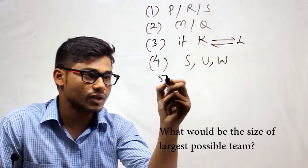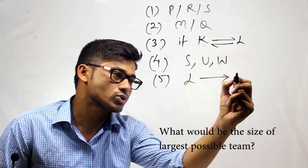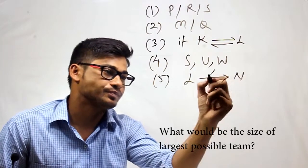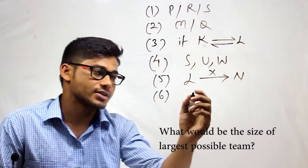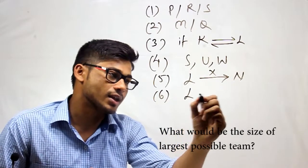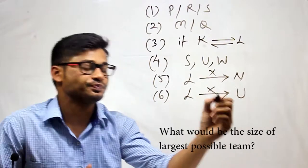Fourth condition says S, U and W must be together. Fifth condition says if I choose L, I cannot choose N. And sixth says if I choose L, I cannot choose U.